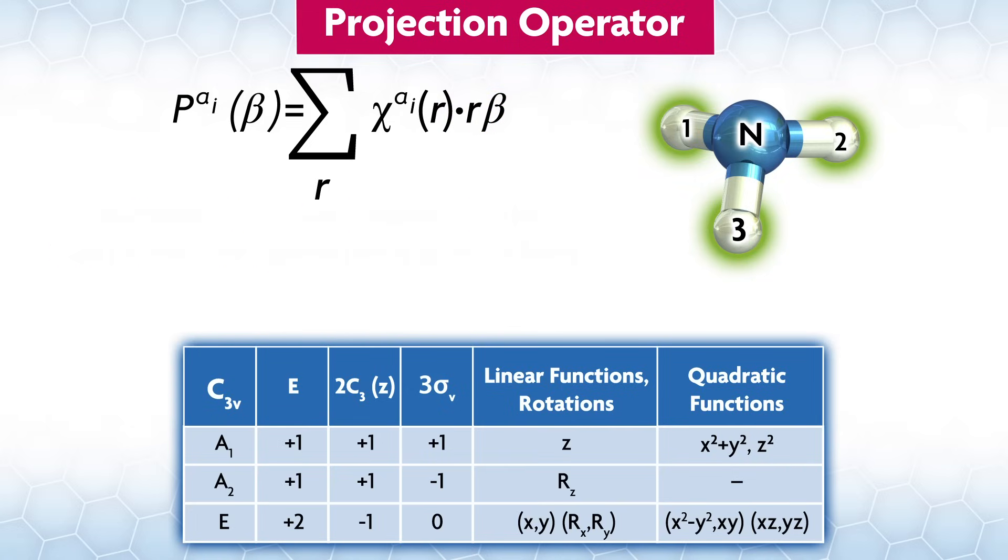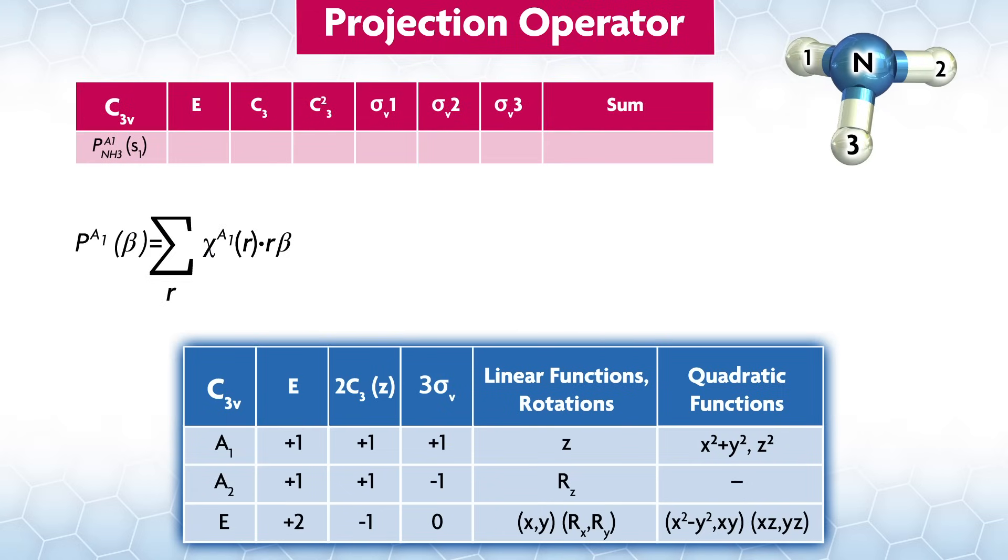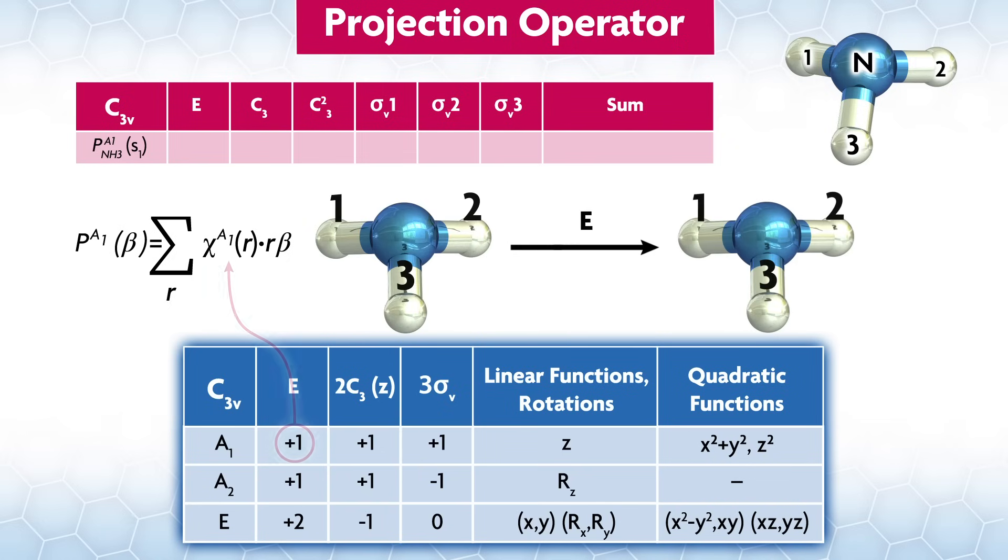Let's apply it to our example, starting with the a1 that's in our total representation. It doesn't really matter which part of our basis we pick for this, so let's use s1 for beta. I think it's a little easier to keep track of the terms in the sum if we use a table, so I'll write it like this, but we will sum all the elements in the table at the end. What our equation says is that we multiply the character in a1 times what happens to s1 when we do the operation. Under identity, we have plus 1, and nothing happens to s1 when we do identity, so we just write s1. In fact, in a1, all the characters are plus 1, so there won't be any changes due to the character in the irreducible rep, so just focus on the operations.